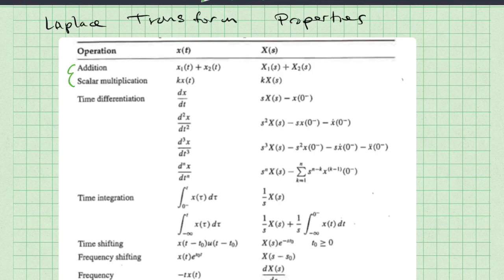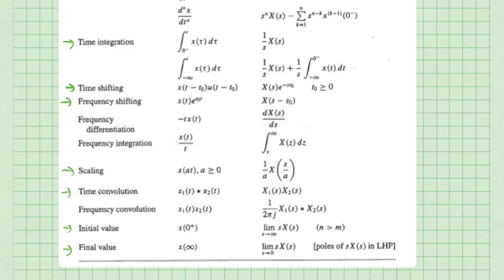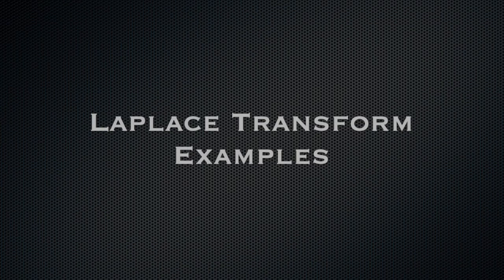Other important properties are time differentiation, time integration, time shifting, frequency shifting, scaling, time convolution, initial value and final value theorem. Some of these other properties, while useful, don't often see a lot of mention in control systems.